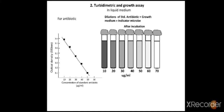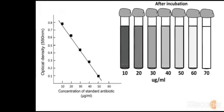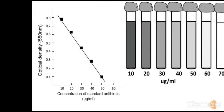The next step is to measure the optical density of all the tubes. We have two parameters: concentration of the standard antibiotic in micrograms per ml on the x-axis, and optical density measured at a particular wavelength on the y-axis. All values of optical density versus respective concentrations are plotted onto a graph, giving a linear line where as concentration increases, turbidity decreases.